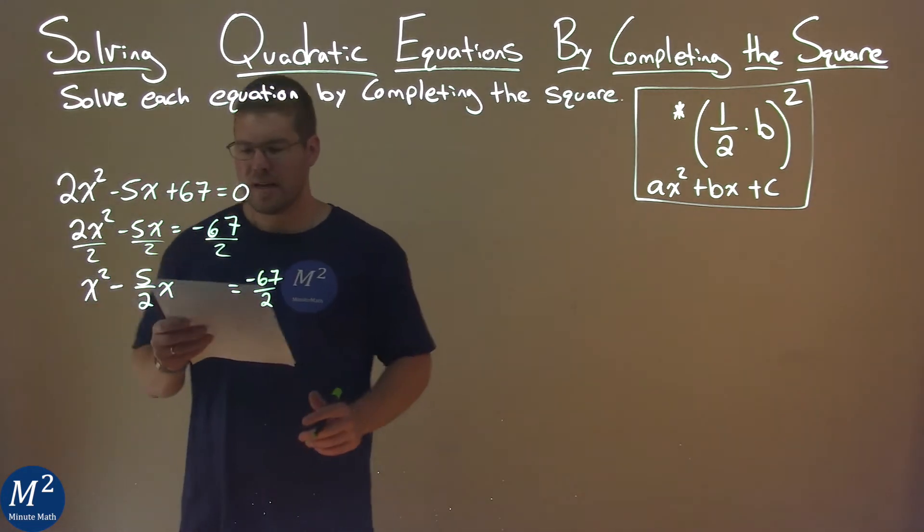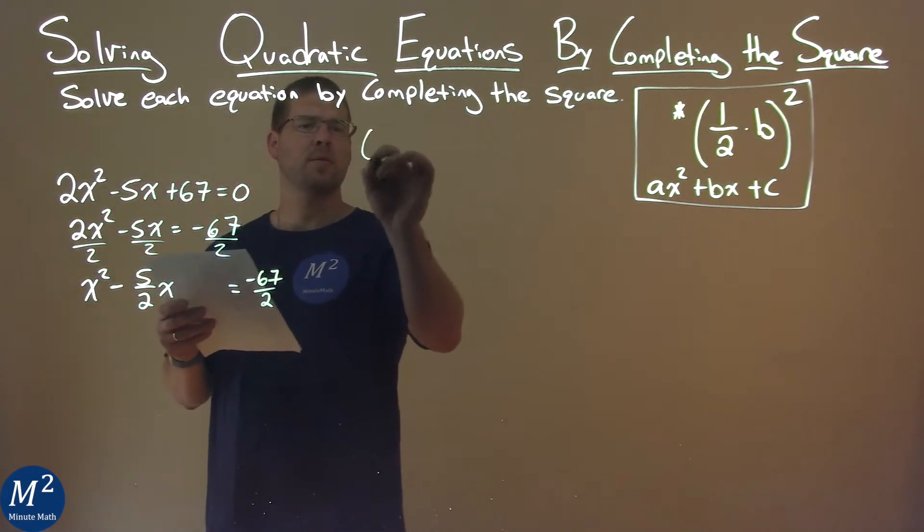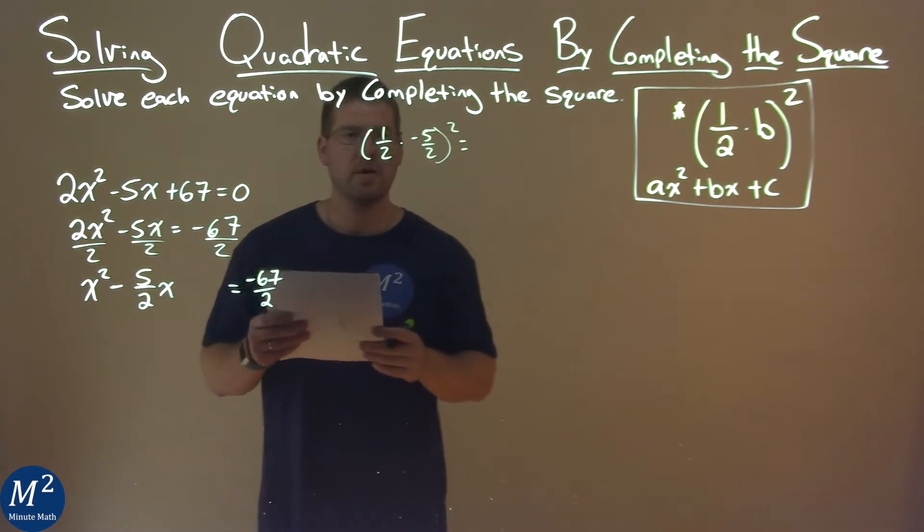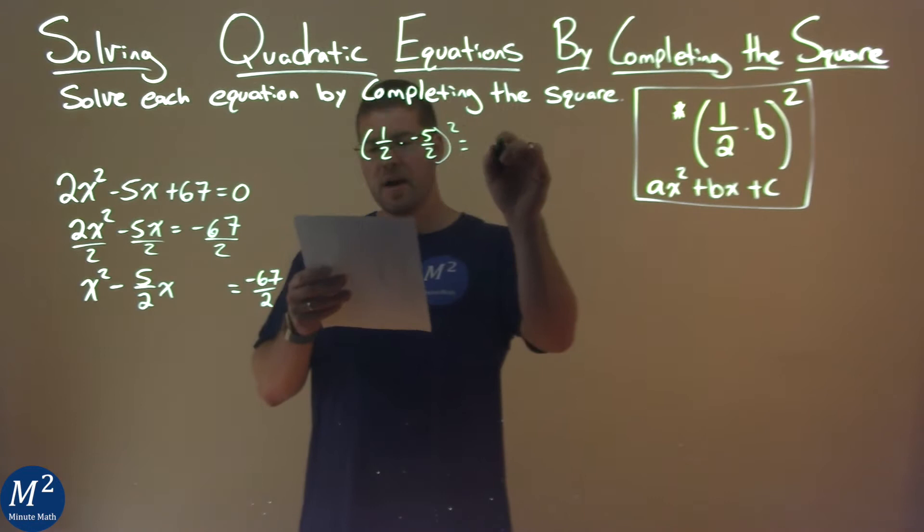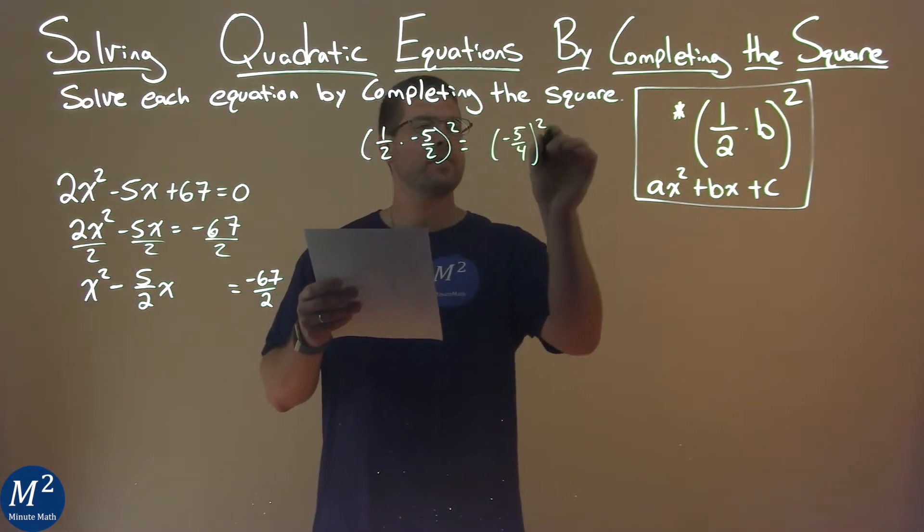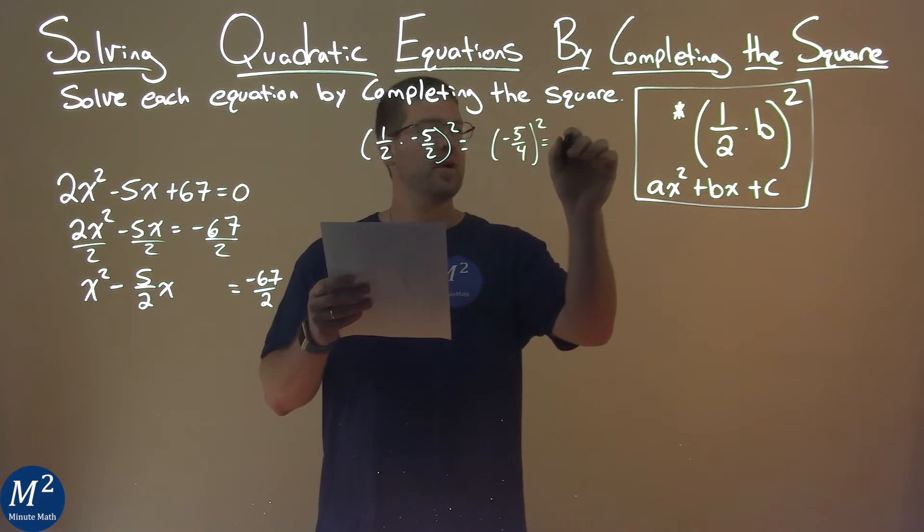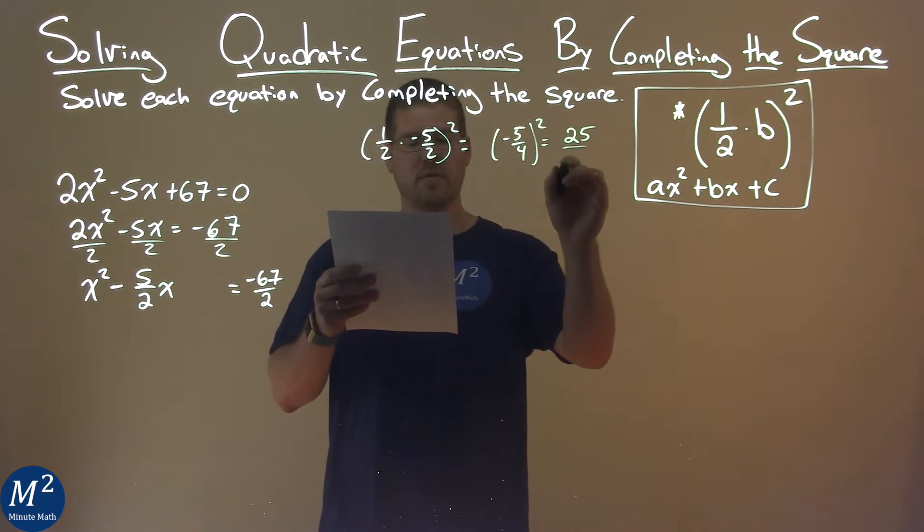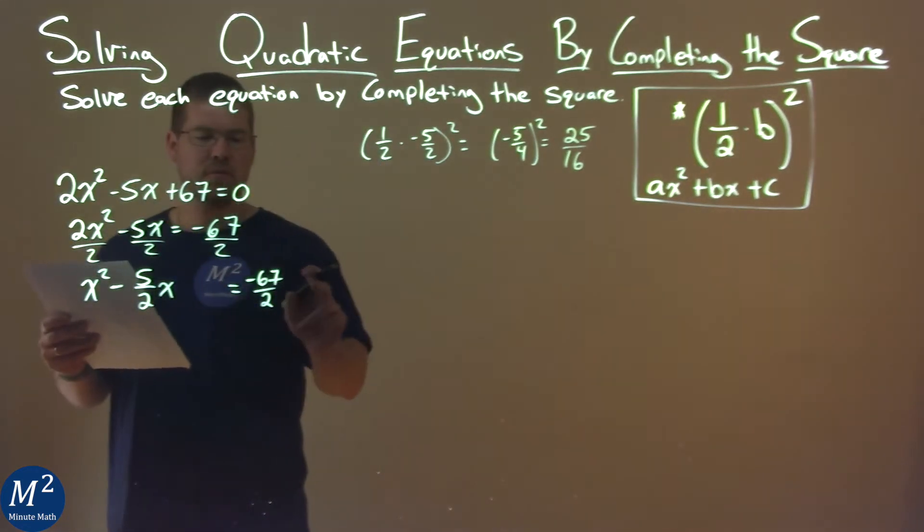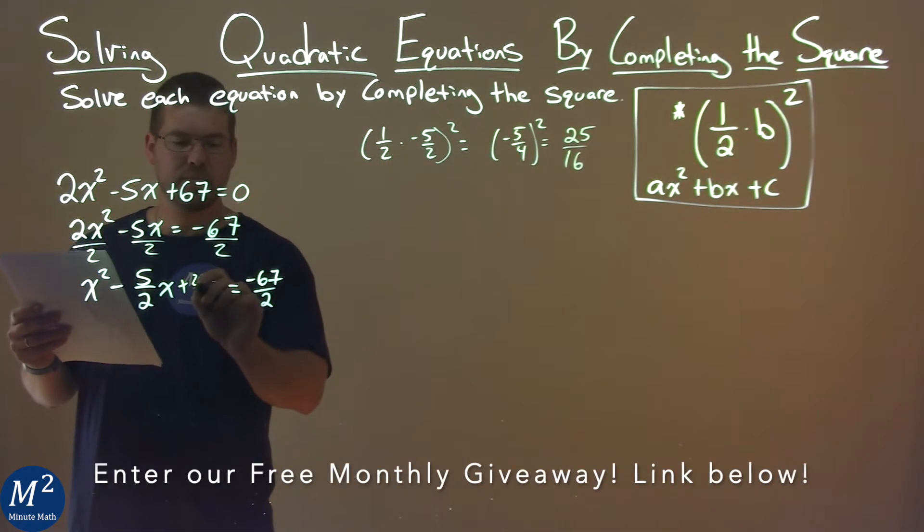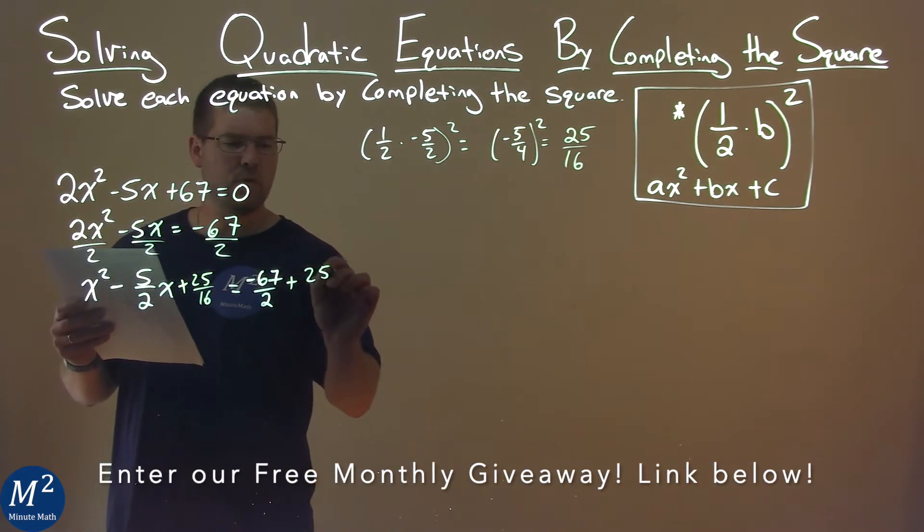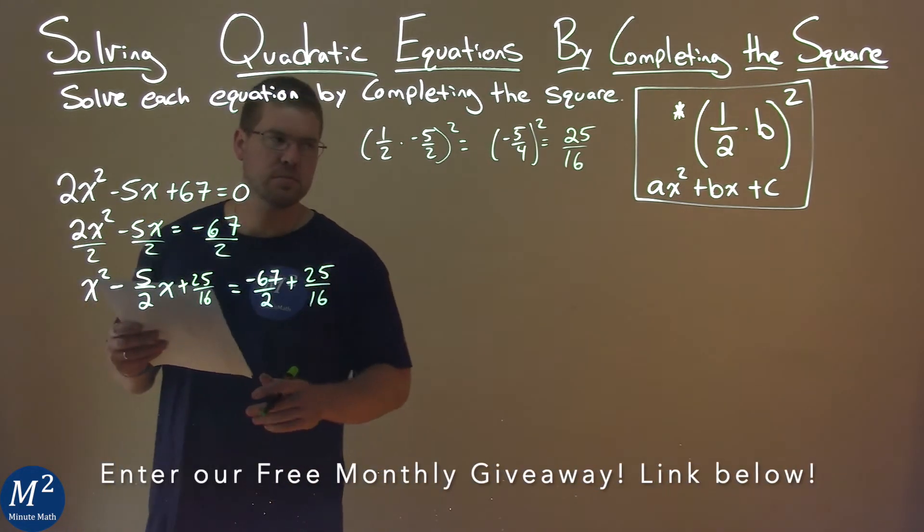My b value is negative 5 halves, so I use my formula: one half times negative 5 halves squared. Well, one half times negative 5 halves is negative 5 fourths, and then we square all of that and get positive 25 over 16. So I'm going to add that 25 over 16 to both sides of the equation. Same process as before, just with fractions, but same rule still applies.